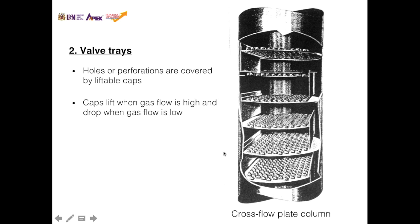This is a picture of a valve tray. The same holes or perforations are on the tray as in previous types, but they are covered by liftable caps. When gas flows from the bottom at a high enough flow rate, the caps lift, allowing gas to seep through the valve and bubble through the liquid. The valve prevents liquid from flowing through the holes to the next level.